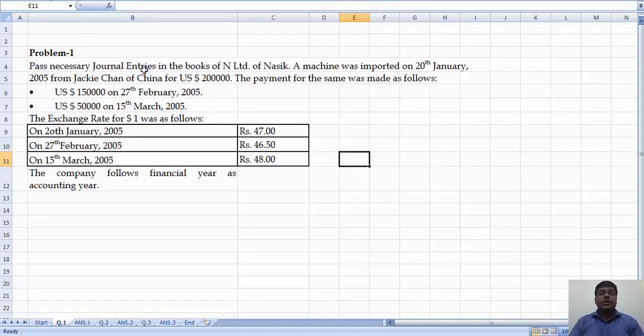Question number 1. Pass necessary journal entries in the books of N Limited of Nasik. A machine was imported on 28th January 2005 from Jackie Chen of China for US dollar 2 lakhs.